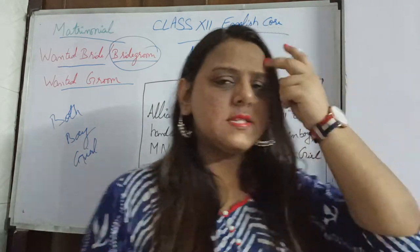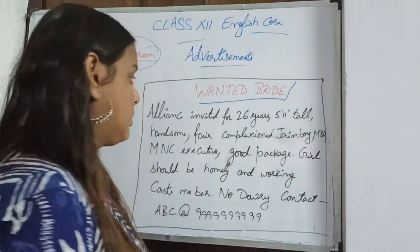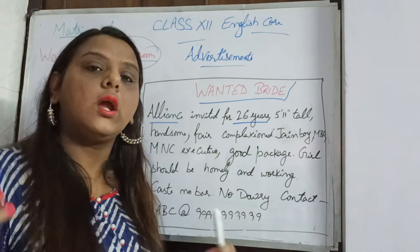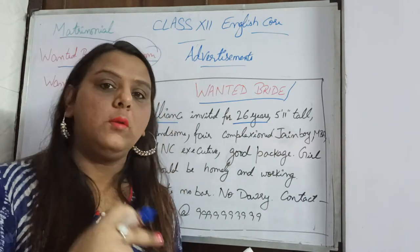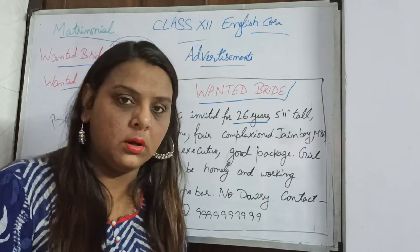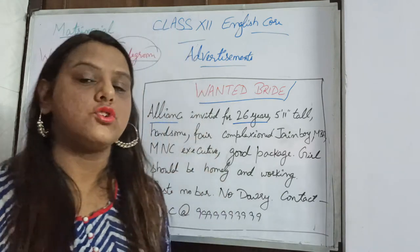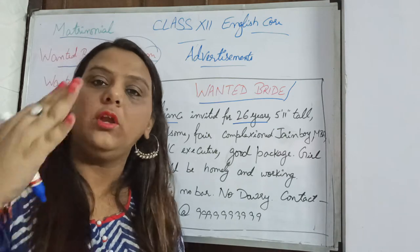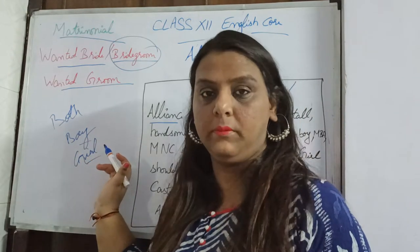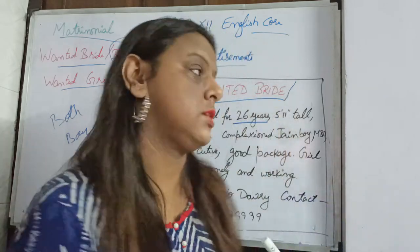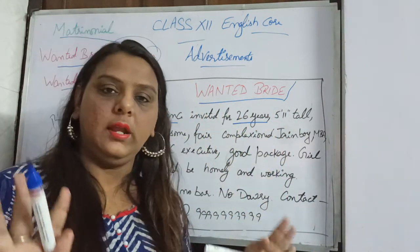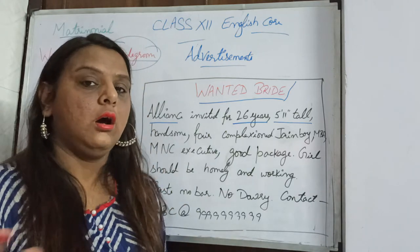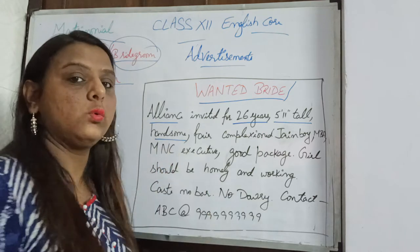As I was saying, you want alliance for a boy, so it reads: 'Alliance invited for a 26-year-old...' So what kind of details would be there? Obviously you mention the age, height — you can also mention the complexion — then educational qualification, where he or she is working, and what kind of person you want. Here it says: 'Alliance invited for 26 years, 5'11" tall' — you are telling about the height so the other person can see whether it is a match. And 'handsome' — you are telling the quality.